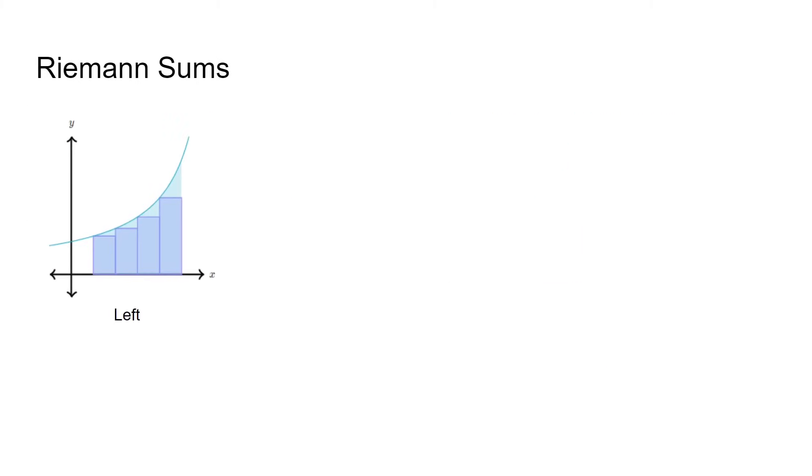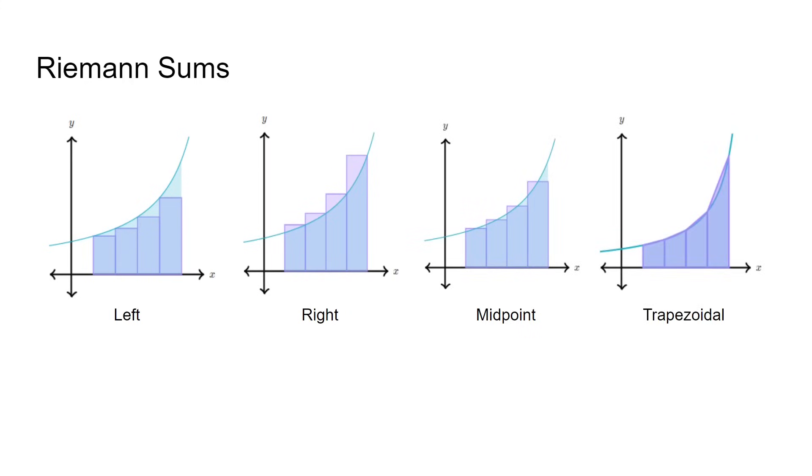To approximate areas under harder graphs, such as curves, we can use Riemann sums. Riemann sum problems almost always come with a table, but you can create your own if you are given a function instead. Left Riemanns touch the curve on the left, right Riemanns touch them on the right, and midpoint Riemanns in the middle. Trapezoidal Riemanns use the trapezoid instead, an even closer approximation.